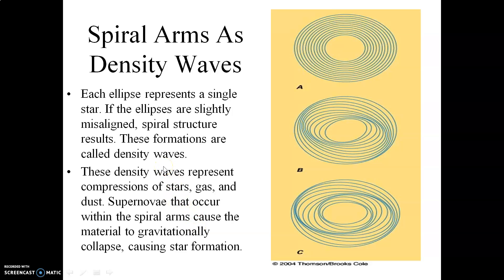These formations are referred to as density waves. These density waves represent compressions of stars, dust, and gas. Supernovae that occur within the spiral arms within these density waves cause the material to gravitationally collapse. This then causes star formation.